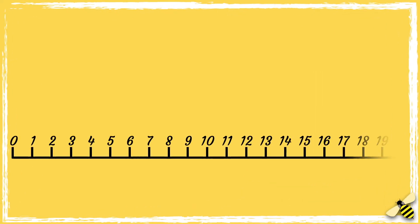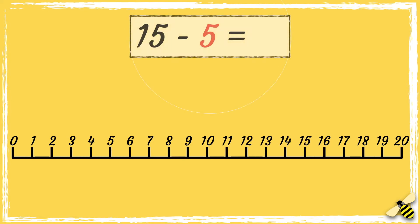Let's have a go at using a number line to 20. 15 take away 5. We start from 15, and because we're taking away 5, we need to jump five digits backwards: one, two, three, four, five. We've landed on